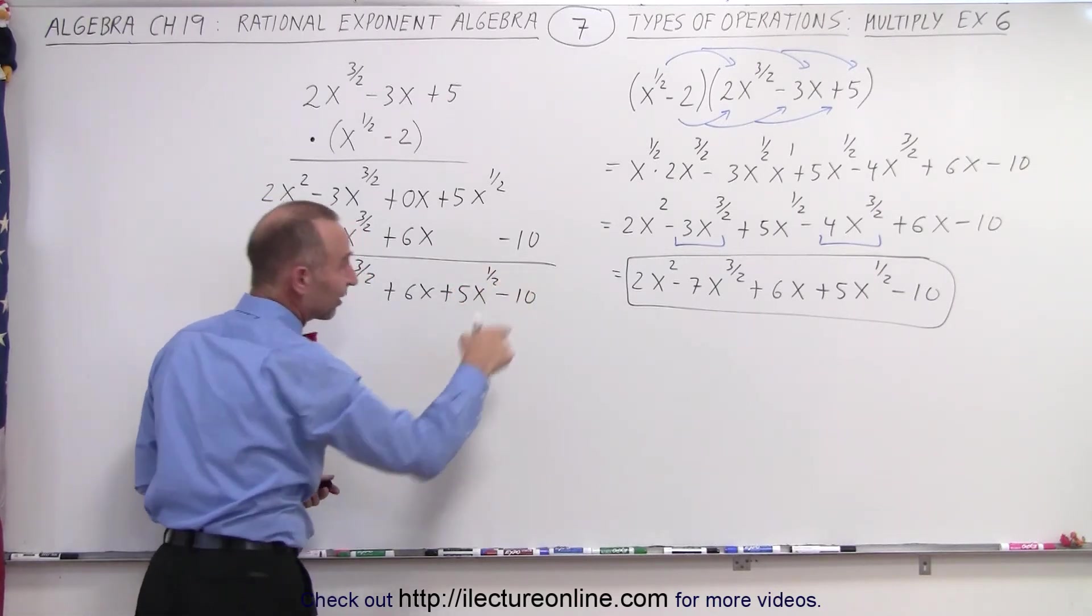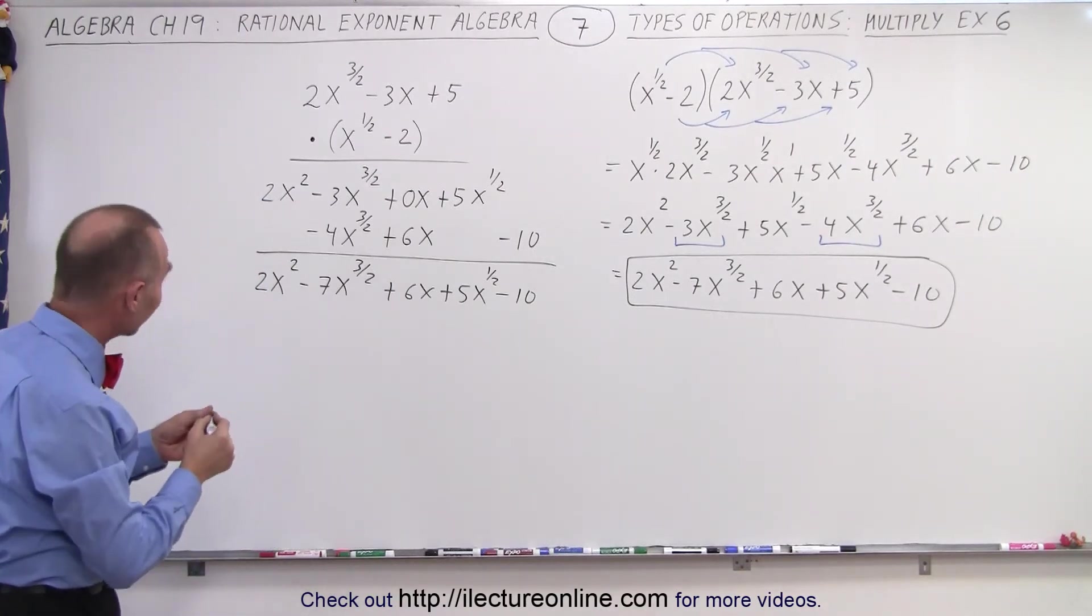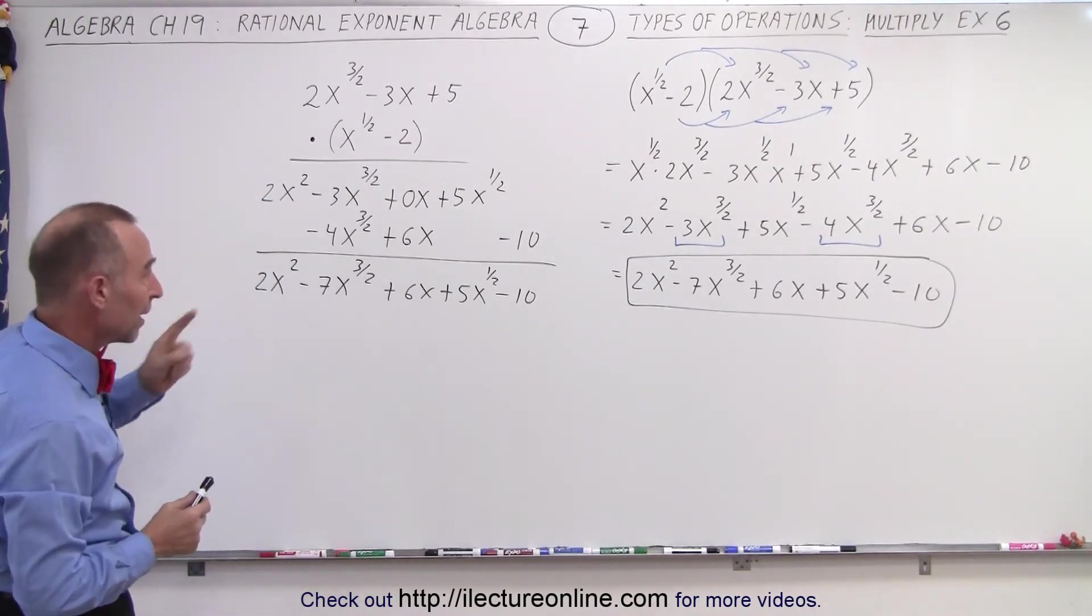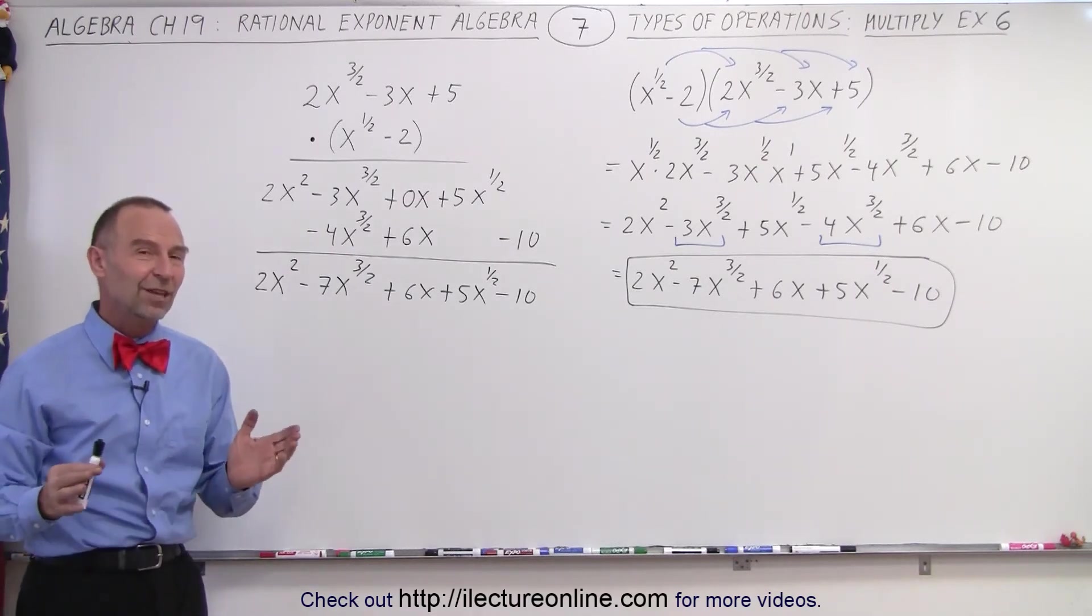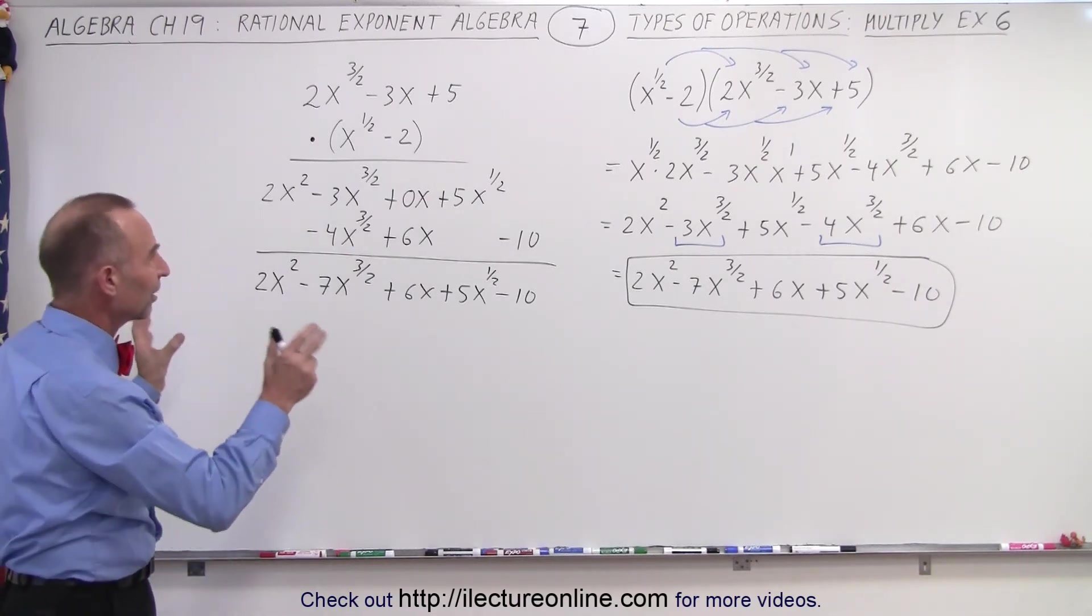And if we did everything right, we should get the exact same result as we have over there. Let's check. 2x squared, minus 6, 7x, 6, 5. It looks exactly the same. So you can see you can use either method to get the very same result.